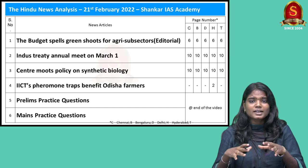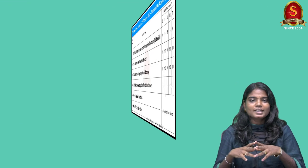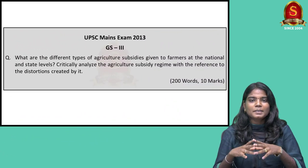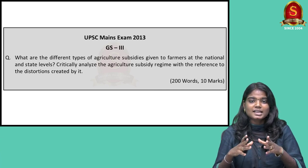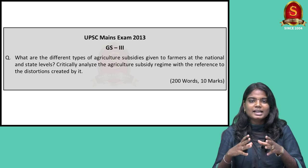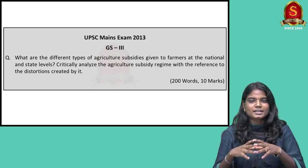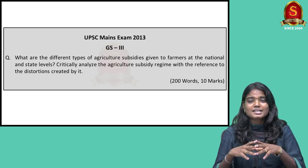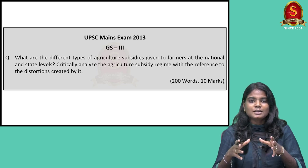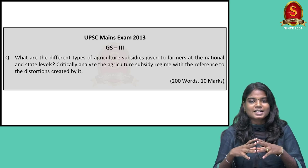These kind of articles are very important. Displayed here is the main question that was asked in the year 2013. The question says: what are all the agricultural subsidies given to farmers at the national and state level, and critically analyze the subsidy regime with reference to the distortions created by it. The different statistics and schemes we are going to see under this article discussion will help you enrich your mains answer.